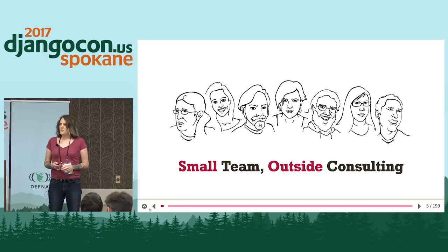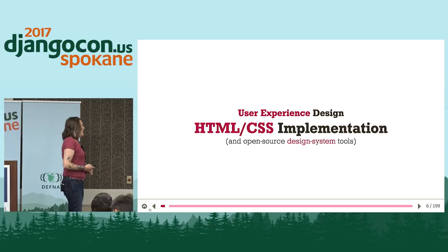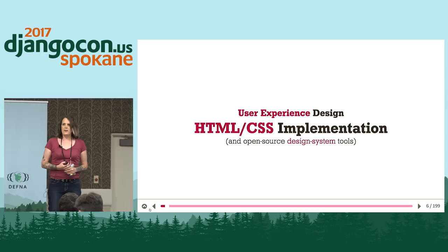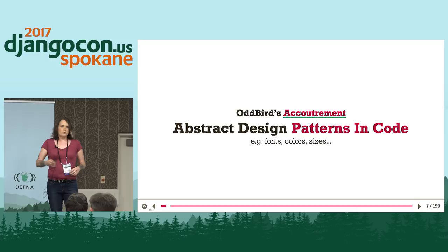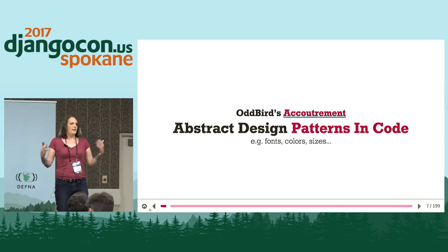We're a small agency doing consulting work. I do a lot of the user experience design, project management, front end design implementation, and writing all sorts of tools for developers — us, and the open source community — including Odd Bird's accoutrement, which helps you manage abstract patterns in code, like colors and fonts. They're not physical patterns like your buttons, but more abstract patterns that exist in a design system.